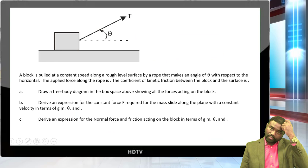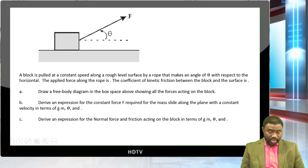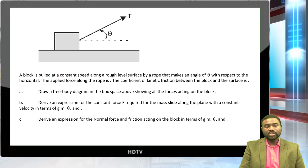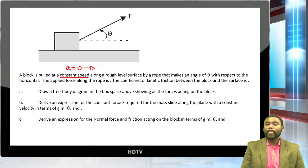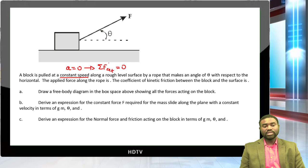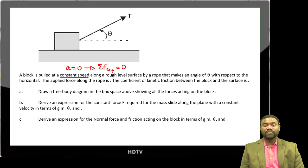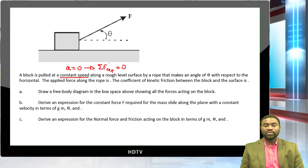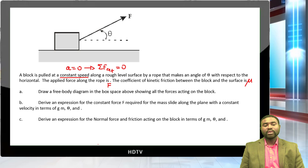The next example: a block is pulled at a constant speed. When an object moves at constant speed in a straight line, the acceleration is zero, which means the net external force is also zero. The block is pulled along a rough level surface by a rope making angle theta with the horizontal. The applied force along the rope is F, and the coefficient of kinetic friction is mu.